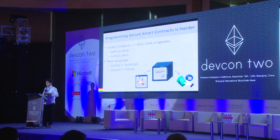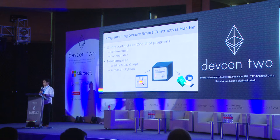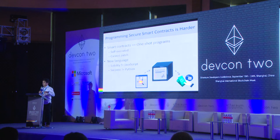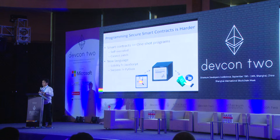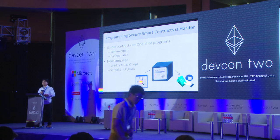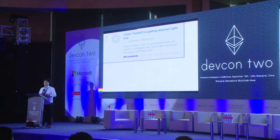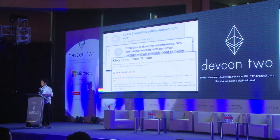The execution model of the smart contract is a little different — it is executed by the consensus model running on the blockchain. Also, we use new languages that are pretty similar to existing languages, so people often make assumptions from JavaScript and Python that do not exist in Solidity and Serpent. That's why we've seen a lot of problems, for example, the DAO with the reentrancy bug, Ether Dies with the gas problem, and King of the Ether Throne with the same issue.